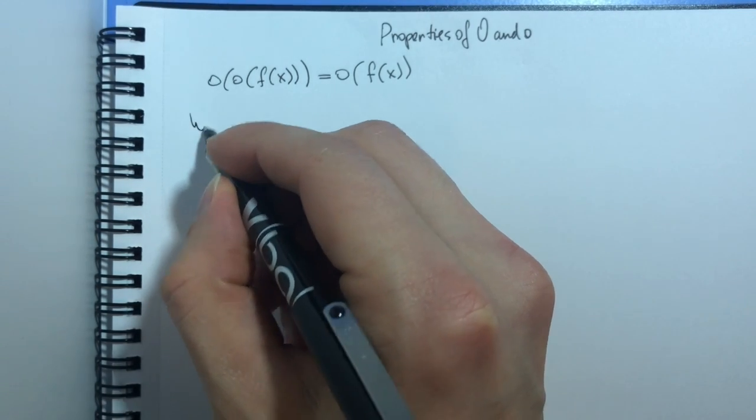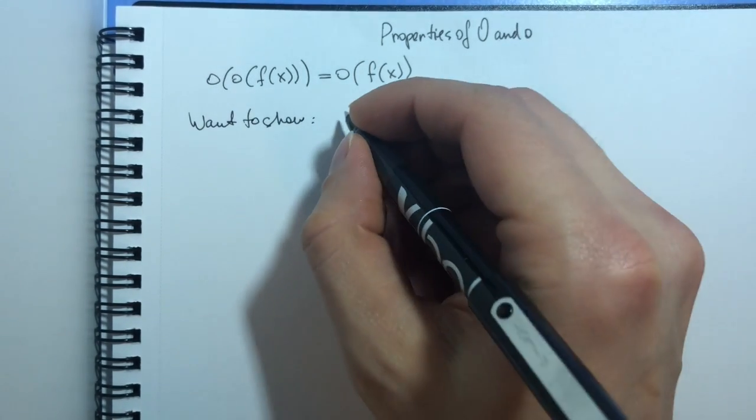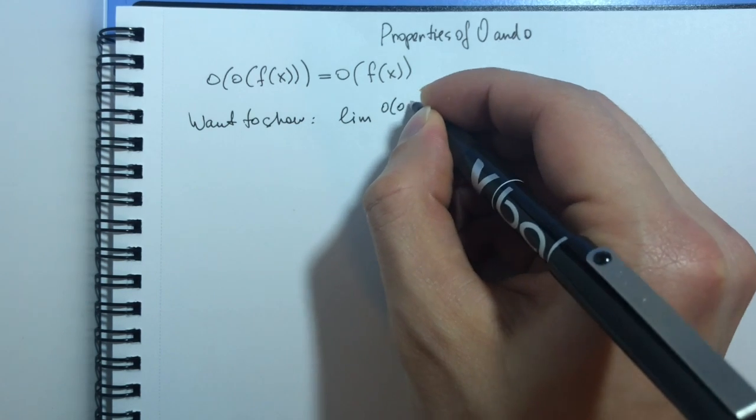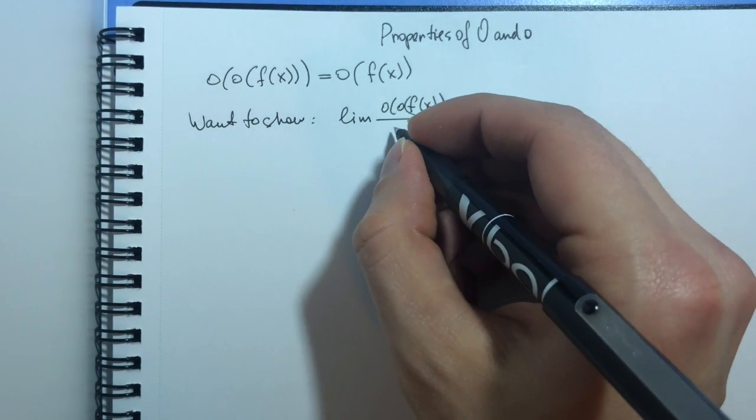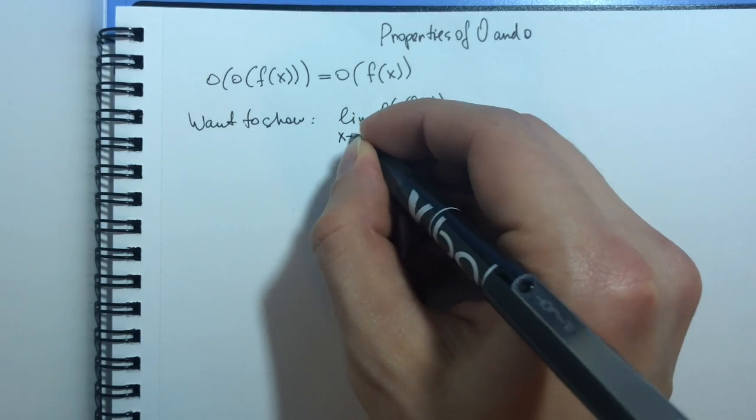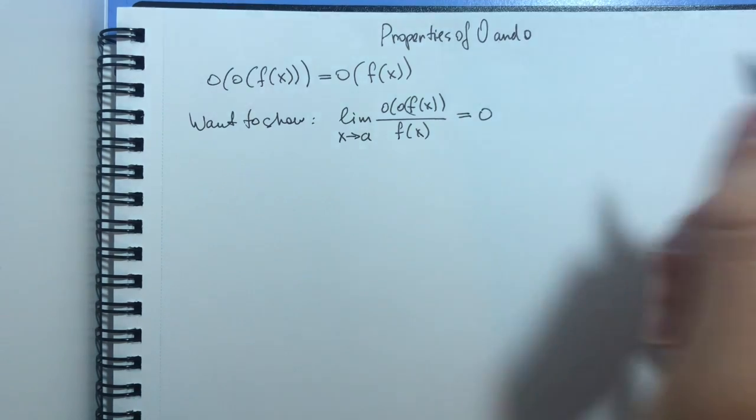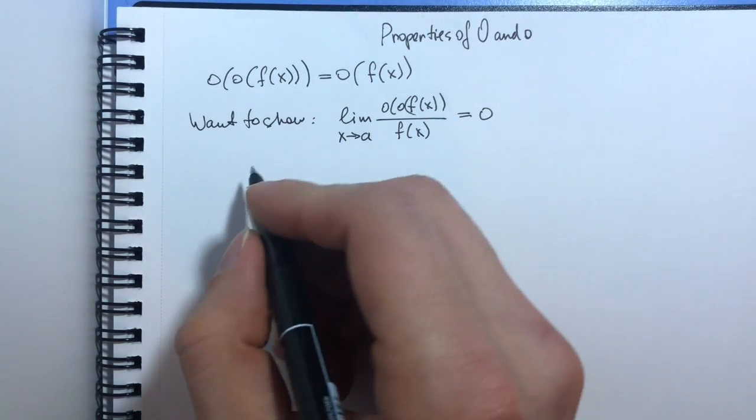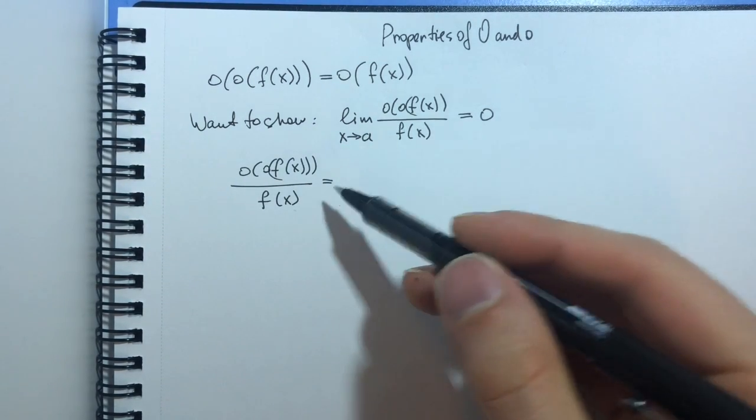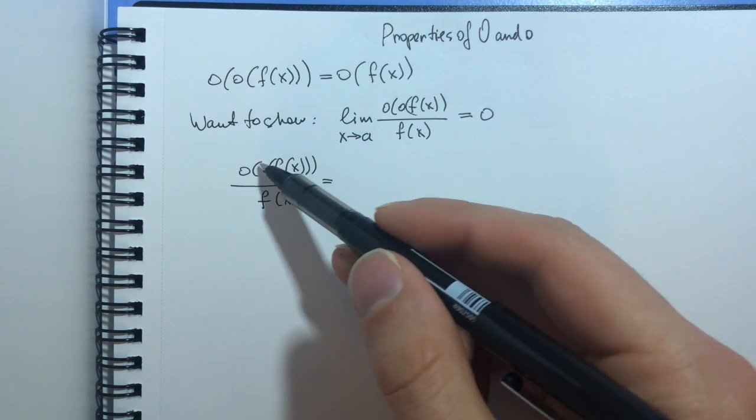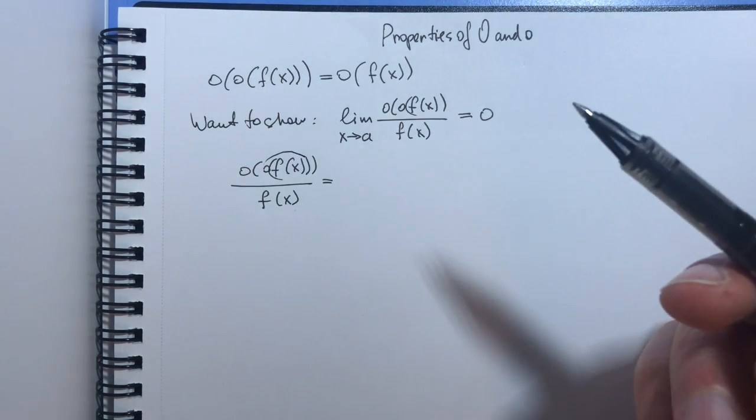So we want to show that the limit of this function over f of x as x tends to a is equal to 0. So how can I do it? Well if I rewrite this fraction, what do I know about this function? This function is little o of this function. Right?